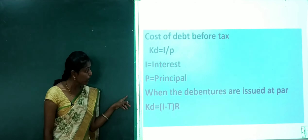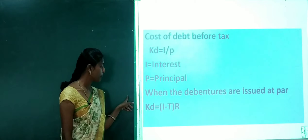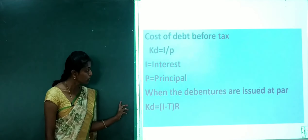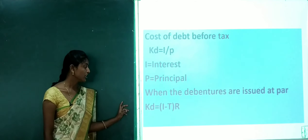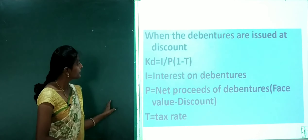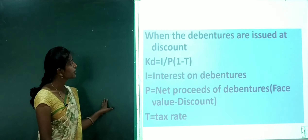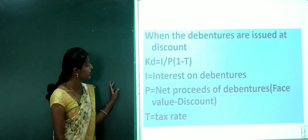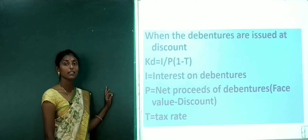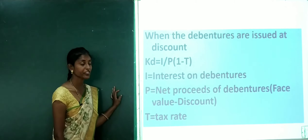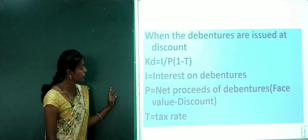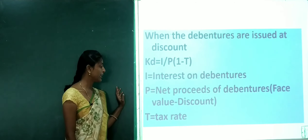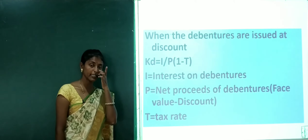When the debentures are issued at par, the formula is KD equals I multiplied by (1 minus T) in bracket R. When the debentures are issued at discount, KD equals I divided by P, multiplied by (1 minus T), where T means tax rate. Here I equals interest on debentures, and P equals net proceeds of debentures, that is face value minus discount.